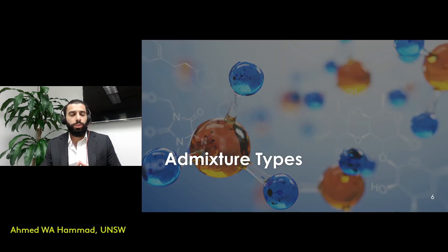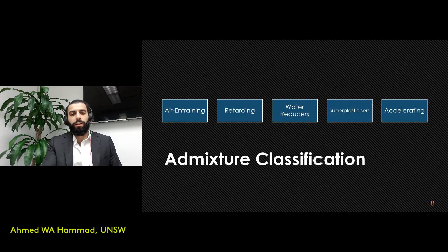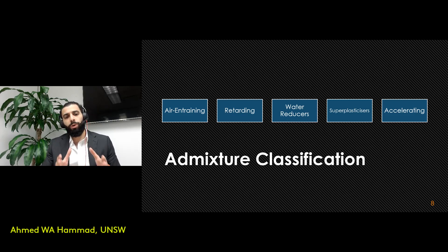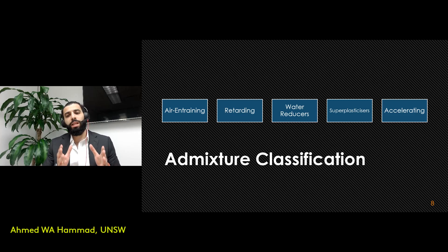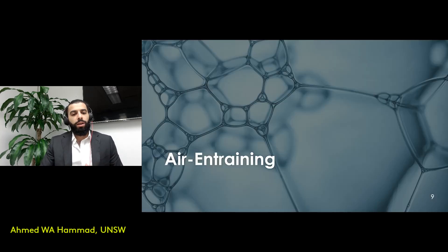Let's look at the admixture types available in construction. They can be classified into five major classes: air-entraining admixtures, retarding admixtures, water reducers, plasticizers, and accelerating admixtures. We'll have a look at each of these now.